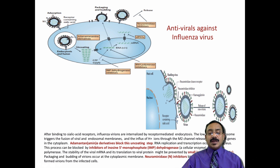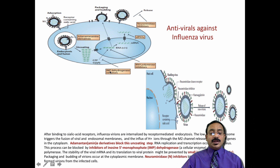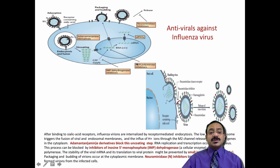RNA replication and transcription occur in the nucleus. This process can also be blocked by inosine monophosphate dehydrogenase inhibitors, which can stop the replication and transcription of RNA. The viral RNA polymerase - since this is an RNA virus, its RNA-dependent RNA polymerase - can also be inhibited by RNA polymerase inhibitors, which inhibit the viral RNA.